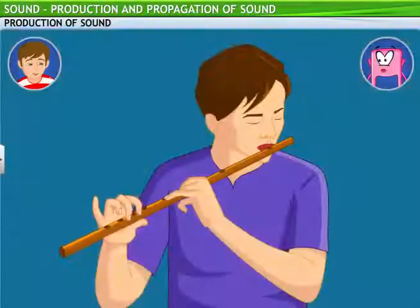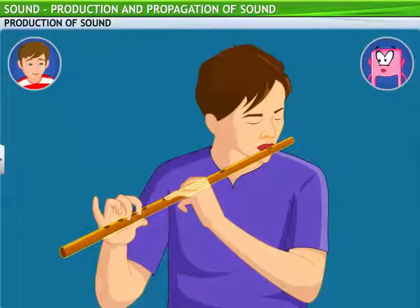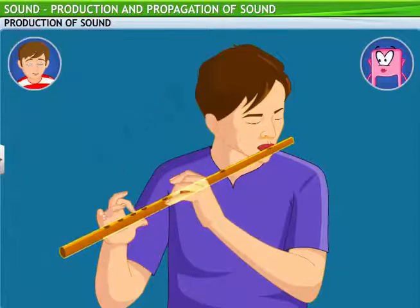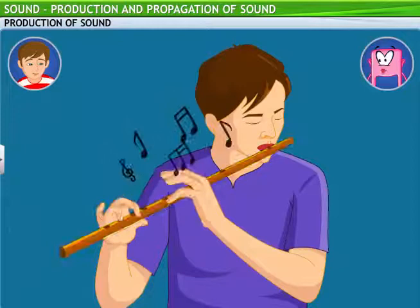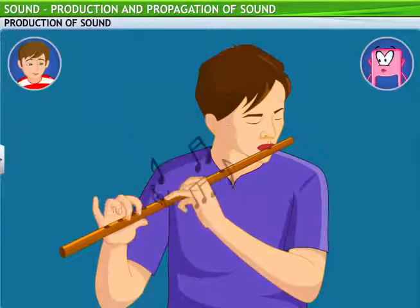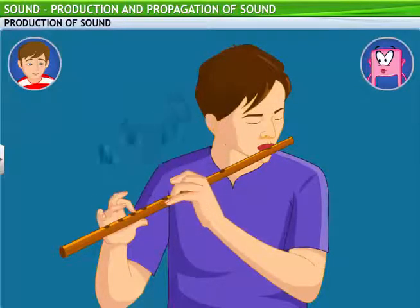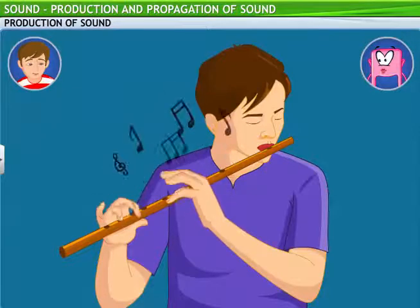Similarly, a pair of cymbals, when hit against each other, vibrate and produce sound. But what about a flute? A flute doesn't have a string, leather membrane or any other surface to strike. The sound that we hear when a flute is played is a result of the vibrations in the air column inside it.